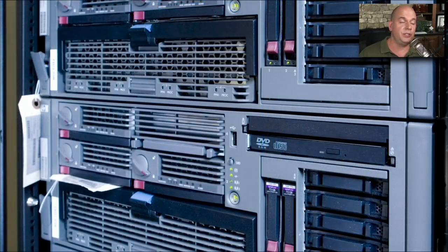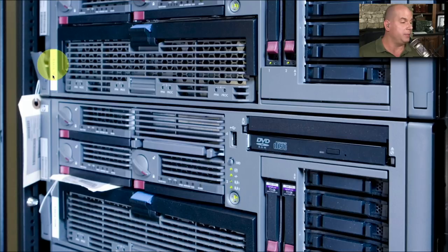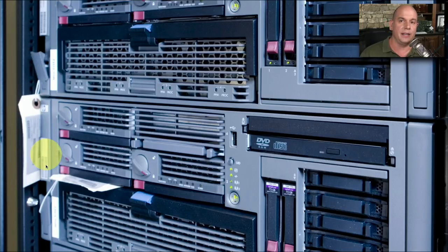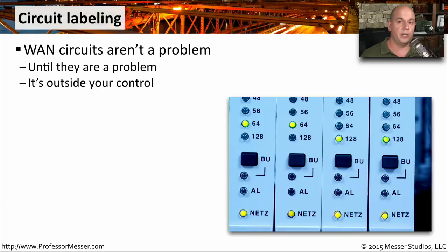If we look at this server, we can see that there are barcodes, which are probably associated with the serial numbers. There's the name of the device itself with a label that's been attached, and there appears to be an asset tag connected to these devices as well. This allows you to cross-reference and make sure that if you're making changes to a device, you have exactly the correct device in mind. It's also a good idea to label your wide area network connections.